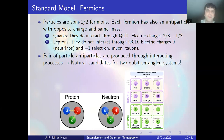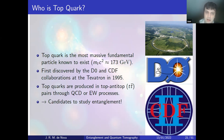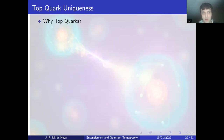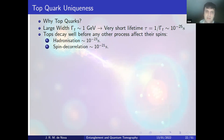The top quark is the most massive fundamental particle known. It was only discovered in 1995 by the D0 and CDF collaborations at the Tevatron at Fermilab, Illinois. Top quarks are produced in top anti-top pairs through QCD or electroweak processes and are natural candidates to study entanglement. Their very large mass gives them a very large width of order ~1 GeV, implying an extremely short lifetime of ~10⁻²⁵ seconds. This means top quarks decay before any process — hadronization or spin precession — can affect their spins.